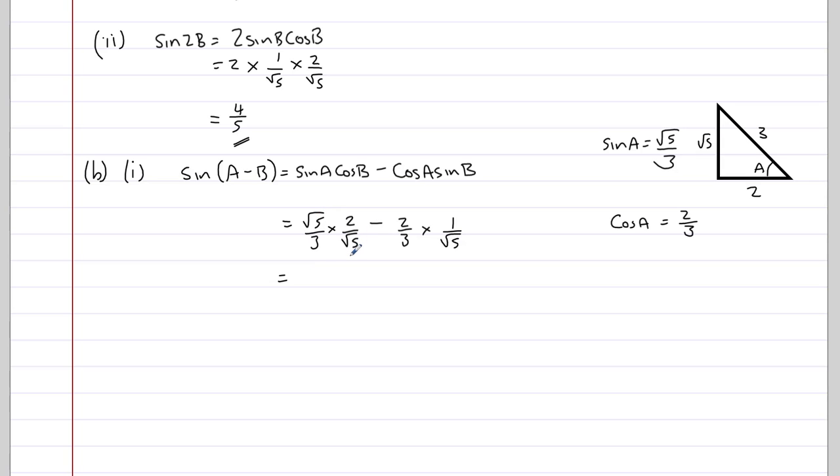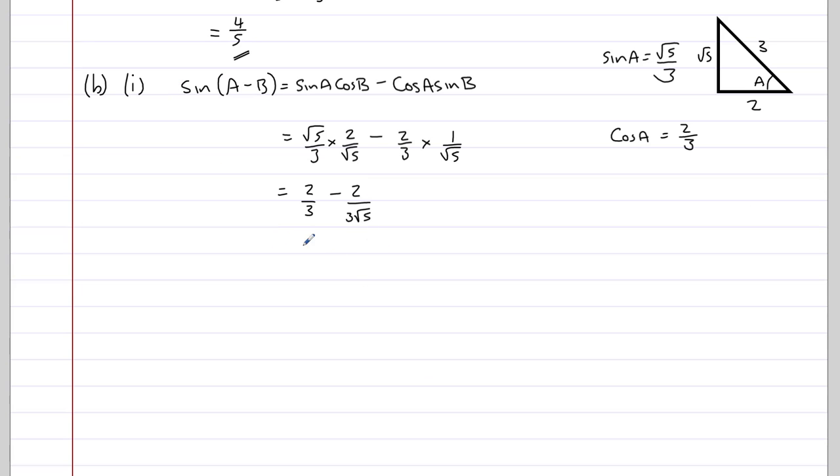We've got root 5 divided by root 5, that'll cancel out, so we end up with 2 thirds, minus 2 thirds times root 5 is 2 over 3 root 5. Let's rationalise the denominator for the second term. If you struggle with this, you can always get your calculator to do it just by simply typing it in. But if we times the top and bottom by root 5, we end up with 2 root 5 over 3 times 5, which is 15.